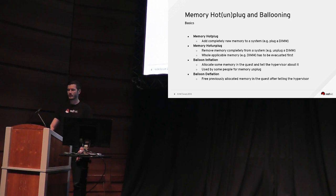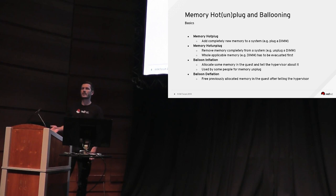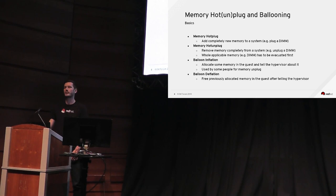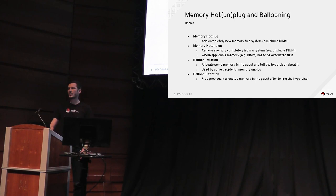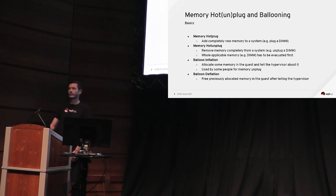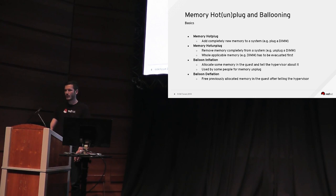Ballooning is different and often confusing because allocation doesn't mean freeing and freeing means allocation. Balloon inflation means the guest OS allocates memory, sends it to the hypervisor, and the hypervisor can then know that memory is unused and remove the backing storage — so allocation here means giving more memory to the hypervisor. Balloon deflation is the other direction: we free previously reported memory so the guest OS can use it again.